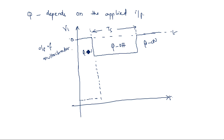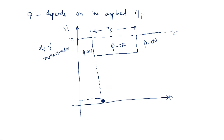Even if the transistor is in on state, there is no voltage, so the capacitor is not discharging. Now at this particular instant, we are having the input voltage change from a higher level to a lower level, where the transistor is set to be in off state. When the transistor is in off state, capacitor charges from here onwards.